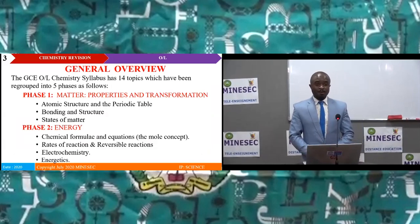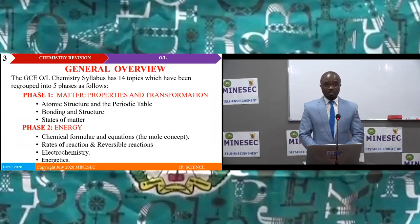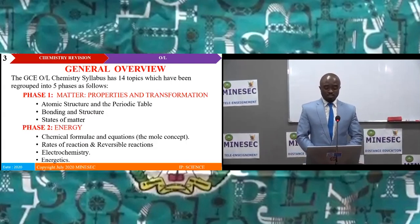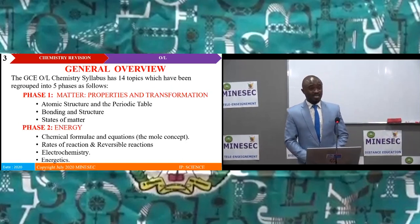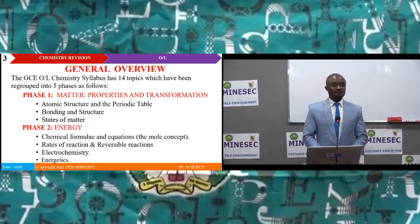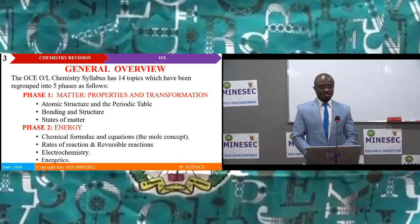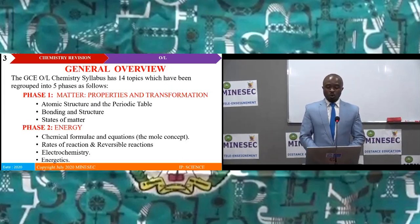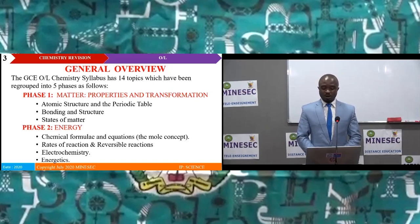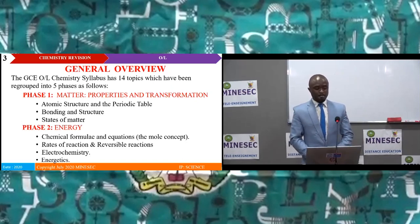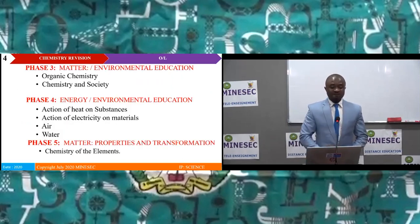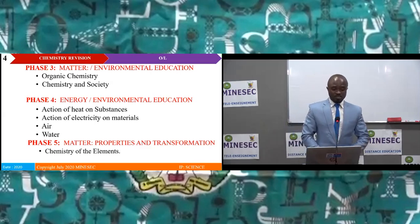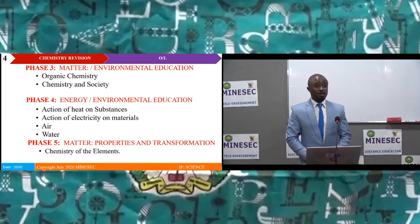Phase one: Matter, Properties and Transformation, which covers the topics of Atomic Structure and the Periodic Table, Bonding and Structure, and States of Matter. Phase two: Energy, which covers Chemical Formulae and Equations, the Molar Concept, Rates of Reaction and Reversible Reactions, Electrochemistry and Energetics. Phase three: Matter and Environmental Education, which covers Organic Chemistry and Chemistry and Society.